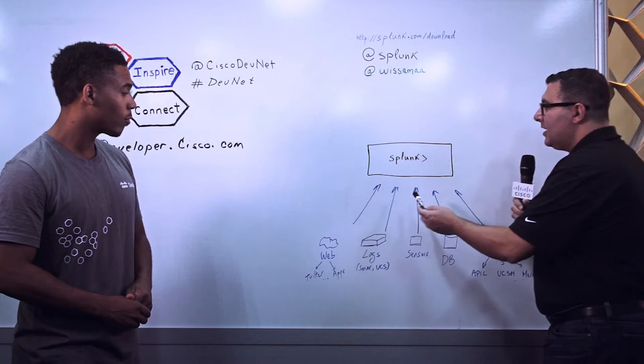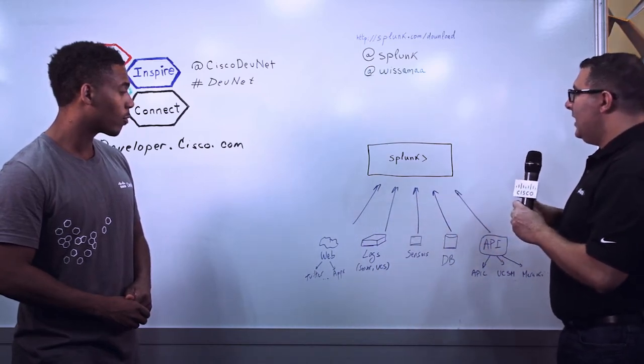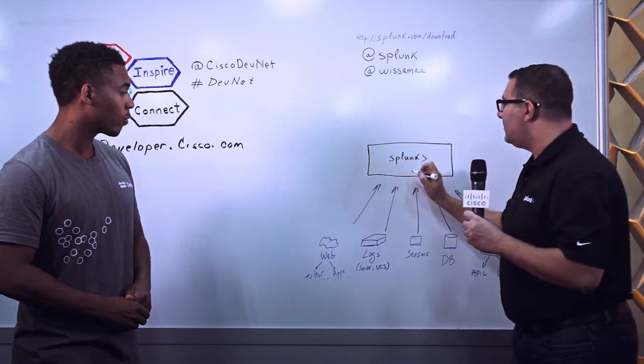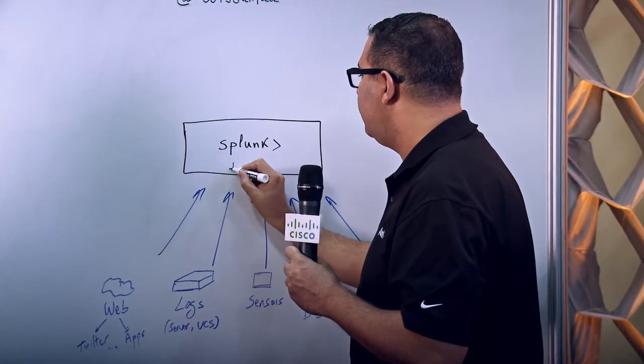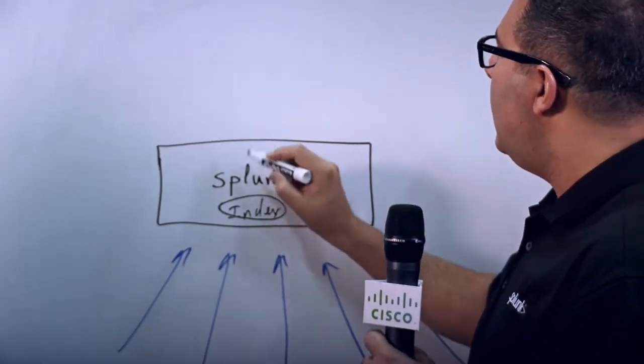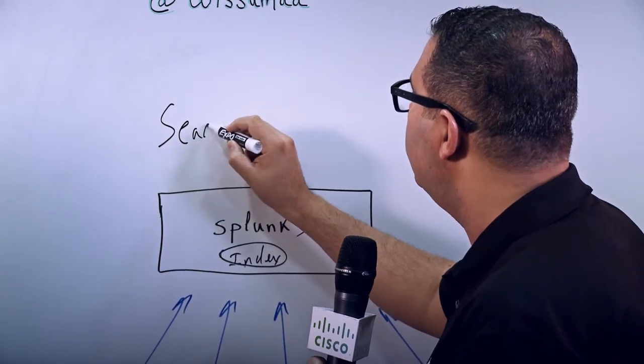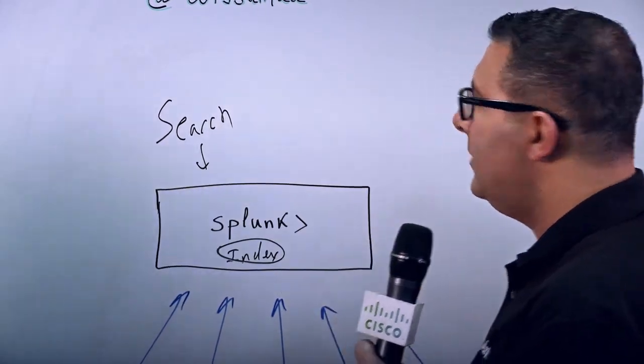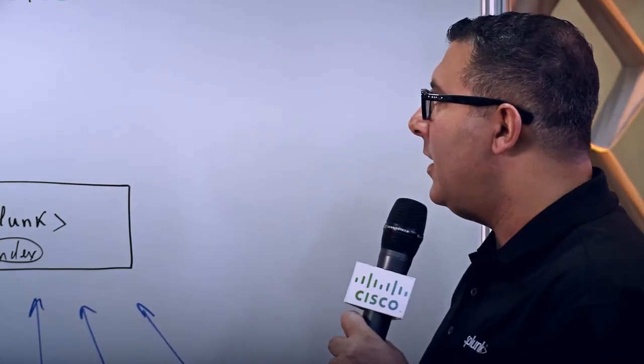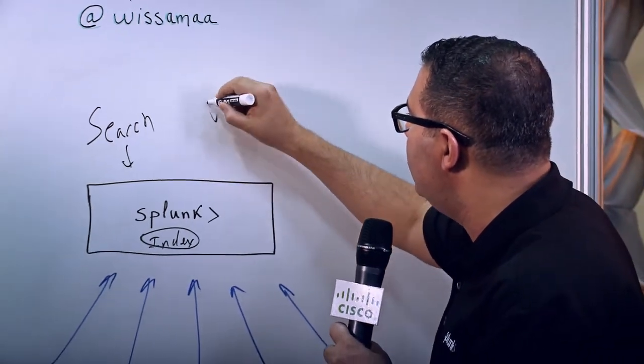So what Splunk does is actually it collects data for you and index that data. So in Splunk, we have the index. And once that data is indexed, now you can search on it. You search on that data using the search language of Splunk. And also, you can analyze. You also visualize that data.